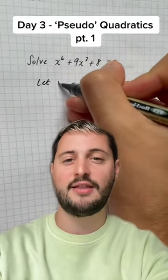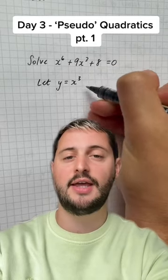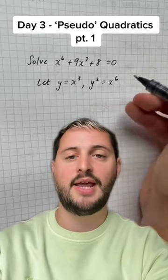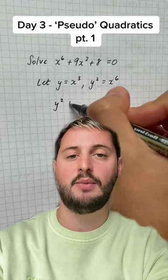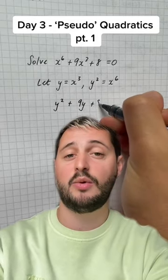Now this is actually not a quadratic, which is why it's a pseudo-quadratic. It's got something to the power of 6. So our trick here is to replace the x cubed with y, meaning we can replace the x to the power of 6 with y squared.